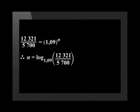The equation will be 12,321 divided by 5,700 is equal to 1.09 to the power of n. We can now solve for n using logarithms. n is equal to the log of 12,321 divided by 5,700 to the base of 1.09. Punching these into our calculator gives us an answer of 8.94 years. It is important not to round off any values until we get to the final answer.